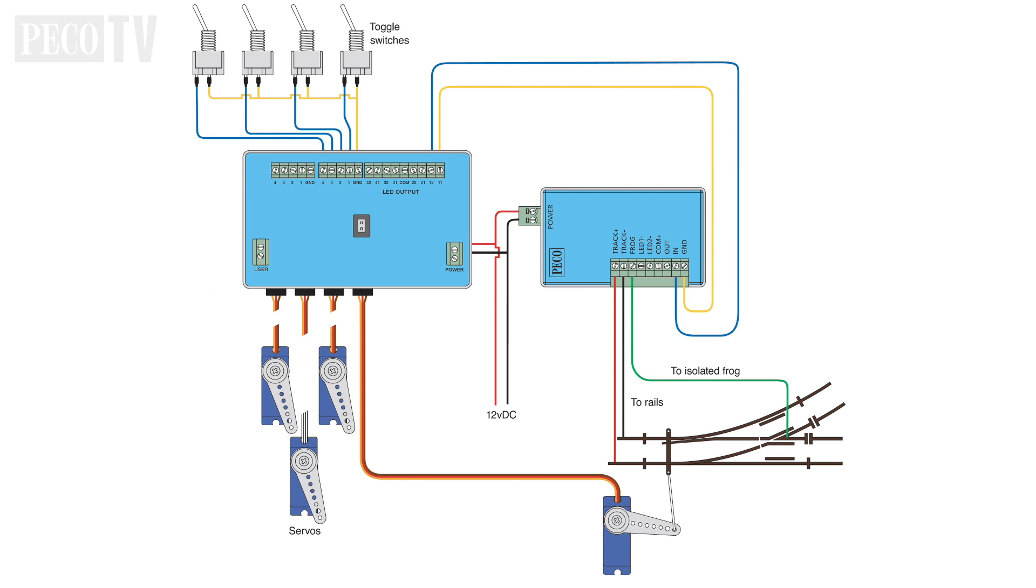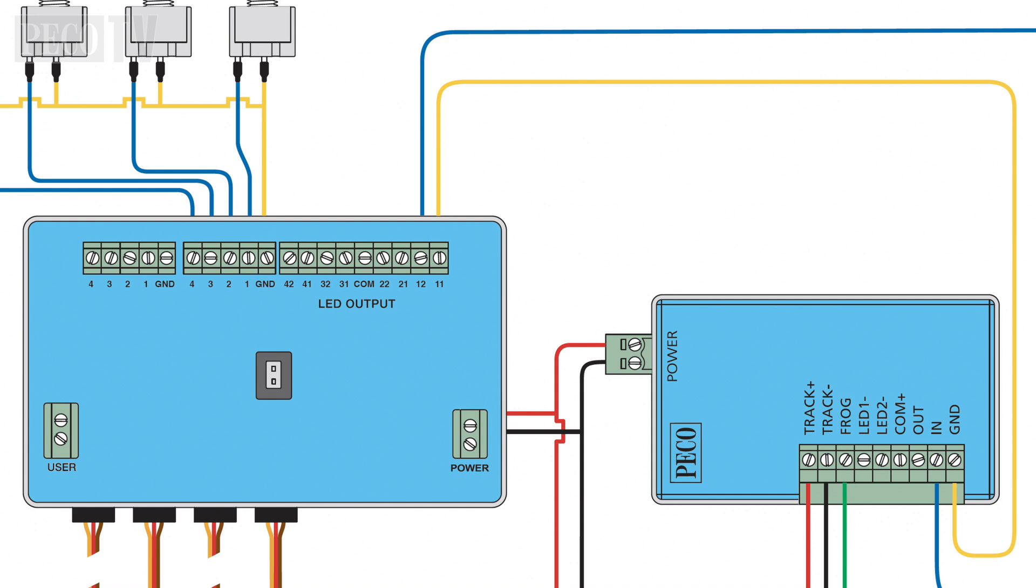For subsequent turnouts, use terminals 21 and 22 for servo 3, terminals 31 and 32, and for servo 4, terminals 41 and 42 respectively.